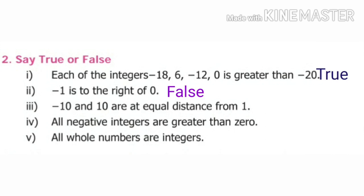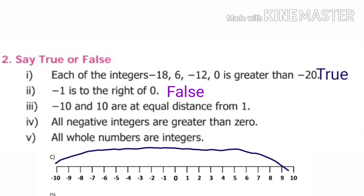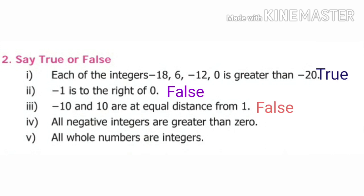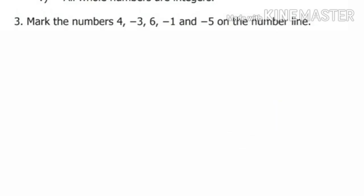Third one: minus 10 and 10 are at equal distance from 1. This is false. Fourth one: all negative integers are greater than zero. Write false. Fifth one: all whole numbers are integers. Yes, so write true.